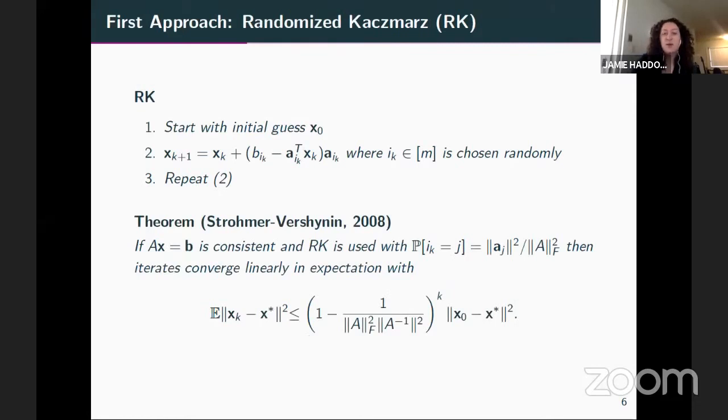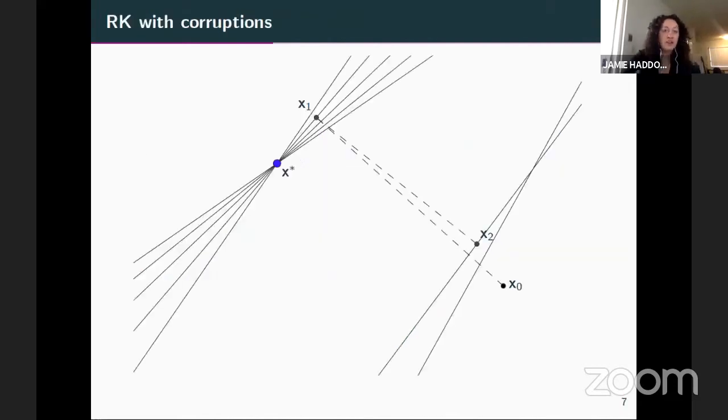But one unfortunate truth is that randomized Kaczmarz, as I've stated it, would handle corruptions very poorly. So I'll go through a couple of pictorial examples. So if we had a consistent system of equations, randomized Kaczmarz, of course, is just updating iterates by sampling hyperplanes and then orthogonally projecting onto them. And so it's easy to see that you're going to be getting closer to the solution with every step of the iterations. However, when, oh excuse me, let me just say also, so there's a nice convergence rate known for this method. So in the case when the system of equations is consistent and we use a probability distribution over the indices of the rows, which has probabilities proportional to the squared norm of the row, then the iterates are going to converge linearly in expectation.